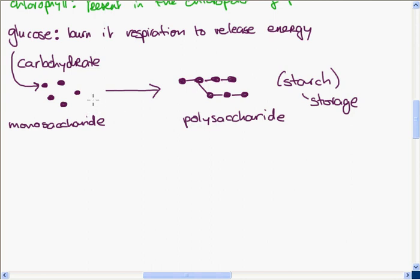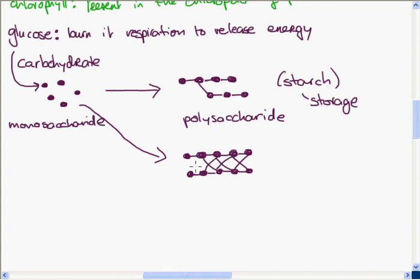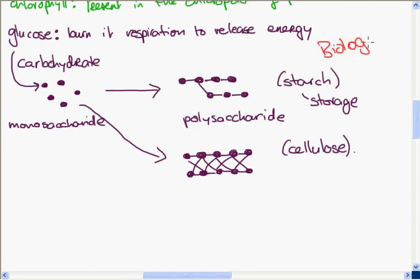There is another polysaccharide the plant can produce from its glucose monosaccharide, and that is cellulose. Cellulose is also many glucose units linked together, but linked in a different way. If you watched the video on biolog.ie called the structure of the cell, you would see that cellulose is used to build cell walls in plants — and it's only plants that have cell walls. So the plant can convert its glucose into cellulose and use it to build cell walls.